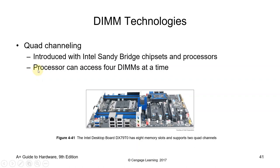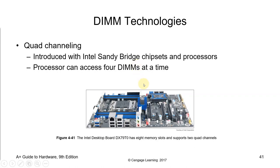Quad-channel was introduced with Intel Sandy Bridge chipsets and processors — the processor can access four DIMMs at a time. Think of memory channels as roads that data passes through. With more roads available, data processing becomes faster because there is less competition. One, two, and four channel configurations are most common today.